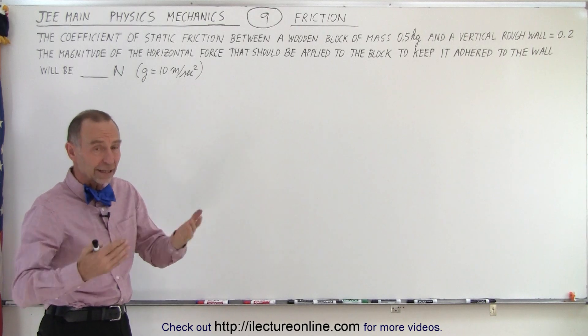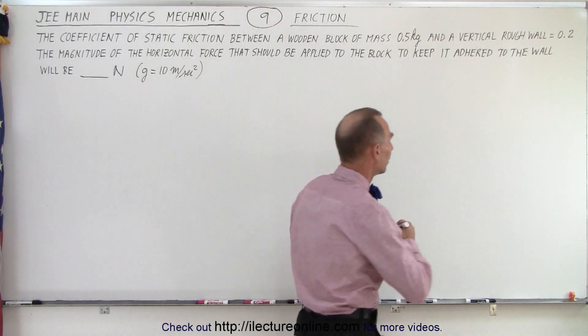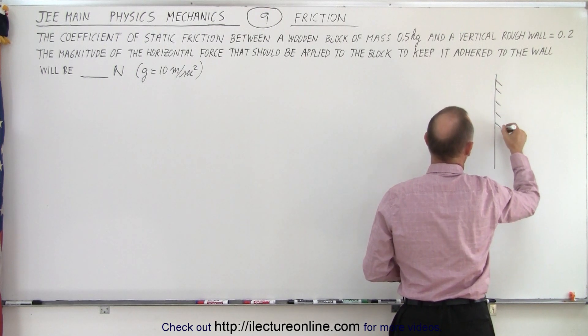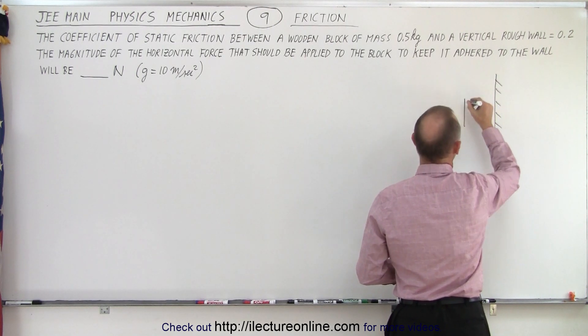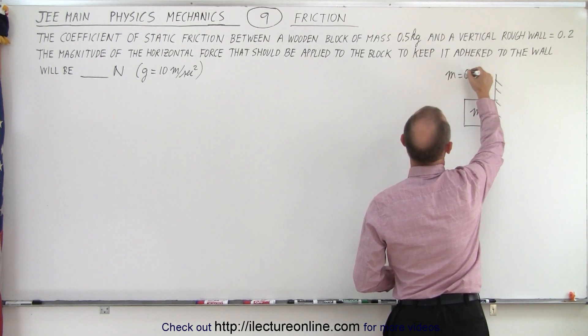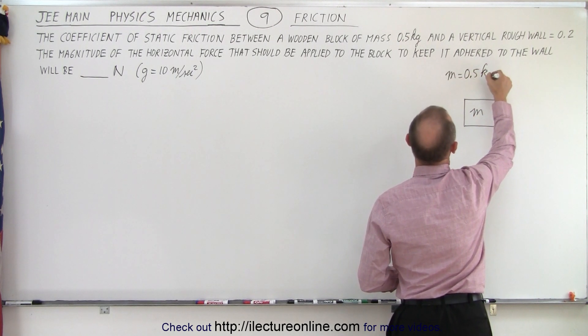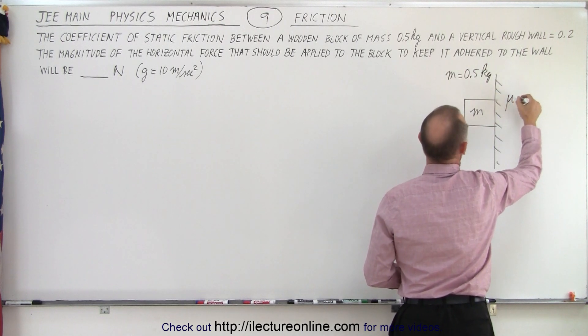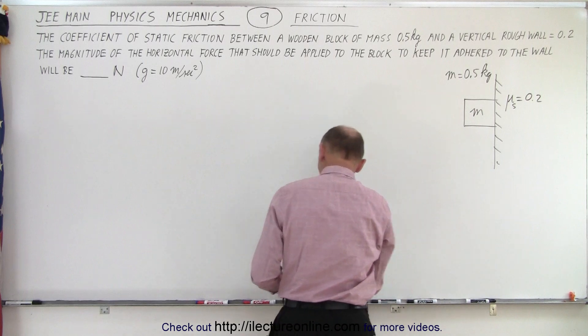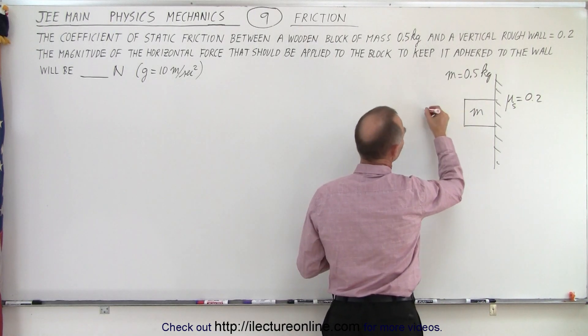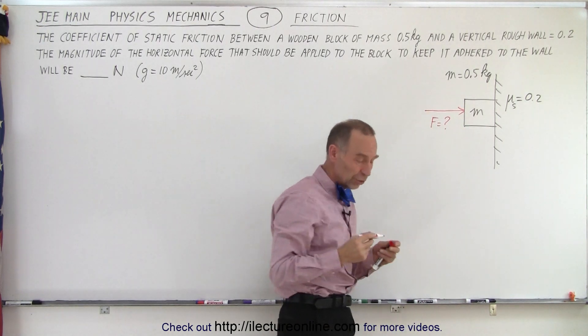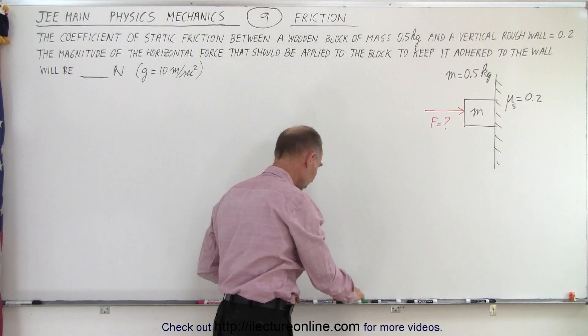So let's make a quick drawing. They didn't give us a figure, so it will help to see what's going on. So we have a rough wall. We have a wooden block. The block has mass m, where m is equal to 0.5 kg. There's a coefficient of static friction of 0.2 and a horizontal force applied, like this. And of course, we're looking for that horizontal force in newtons to keep the block from sliding.